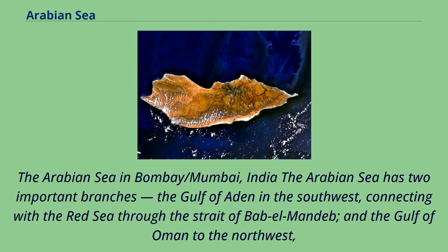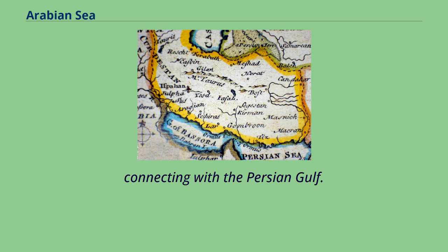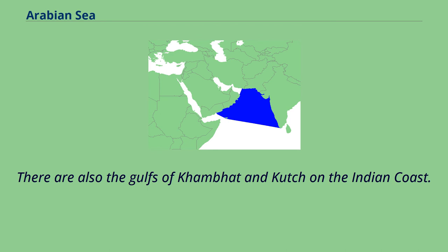The Arabian Sea near Mumbai, India has two important branches: the Gulf of Aden in the southwest, connecting with the Red Sea through the Strait of Bab al-Mandeb, and the Gulf of Oman to the northwest, connecting with the Persian Gulf. There are also the Gulfs of Khambhat and Kutch on the Indian coast.